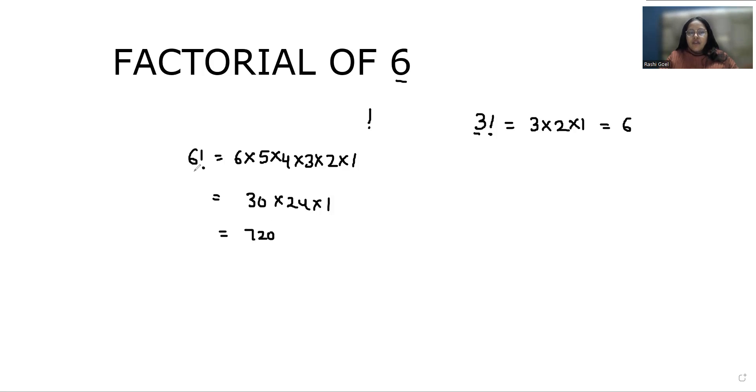Every factorial can be found with the help of a simple formula: n factorial equals n times (n-1) times (n-2) times (n-3) and so on till 1.